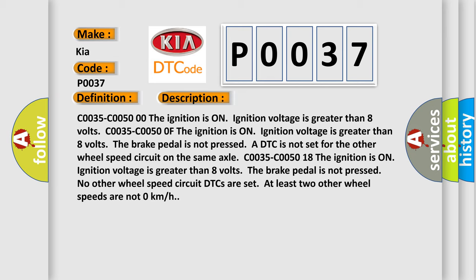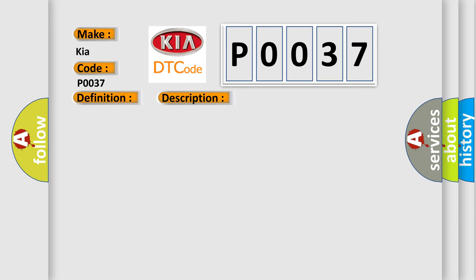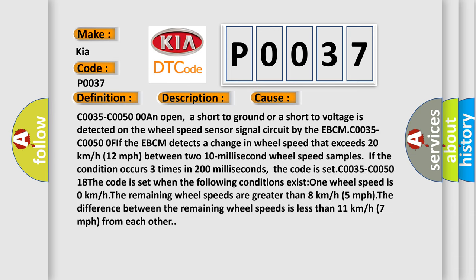This diagnostic error occurs most often in these cases. C0035-C0050 00: An open, a short to ground or a short to voltage is detected on the wheel speed sensor signal circuit by the EBCM.